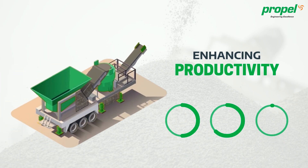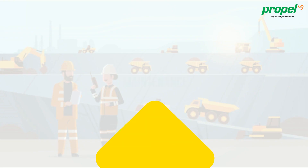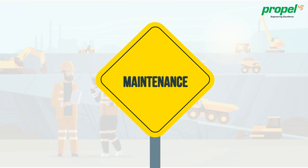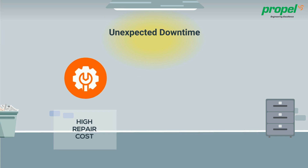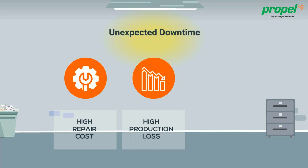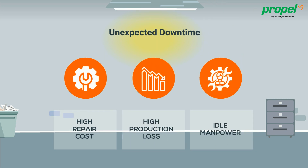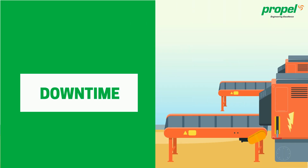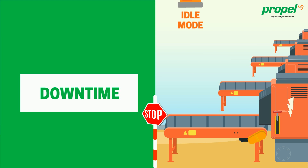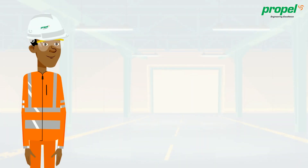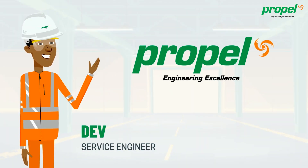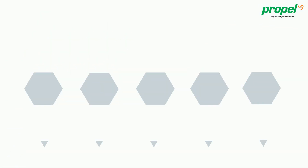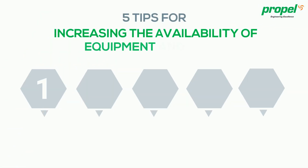Enhancing productivity is the prime focus for all of us, and maintenance as per the company standards is important for this. An unexpected downtime can lead to higher repair costs, production loss, and idle manpower when compared to scheduled maintenance. Downtime of a machine will also put all the connected equipment on idle mode. I am Dale, a service engineer from Propel Industries Pvt Ltd. Let me share a few tips which will help you increase the availability of your equipment and plant.